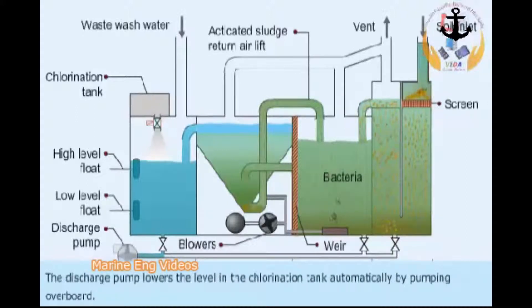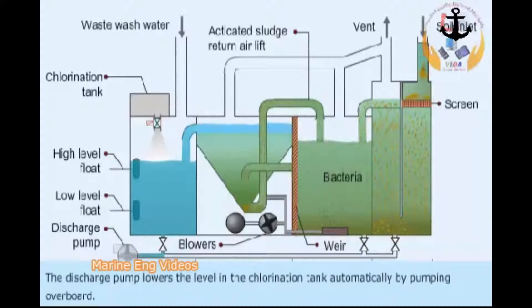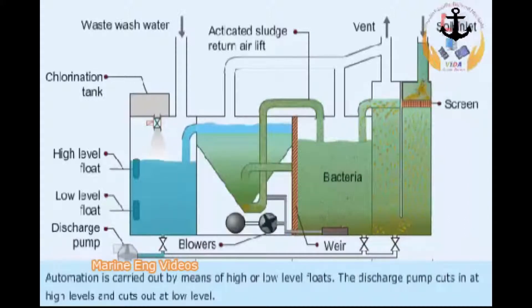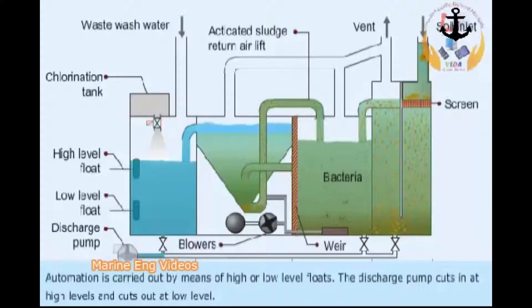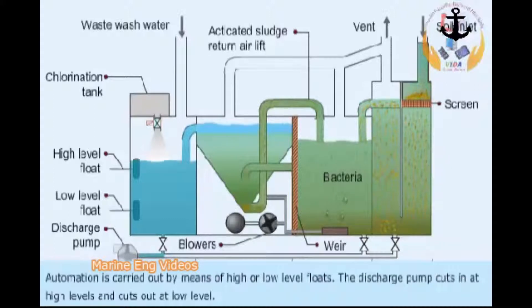The discharge pump lowers the level in the chlorination tank automatically by pumping overboard. Automation is carried out by means of high or low level floats. The discharge pump cuts in at high level and cuts out at low level.